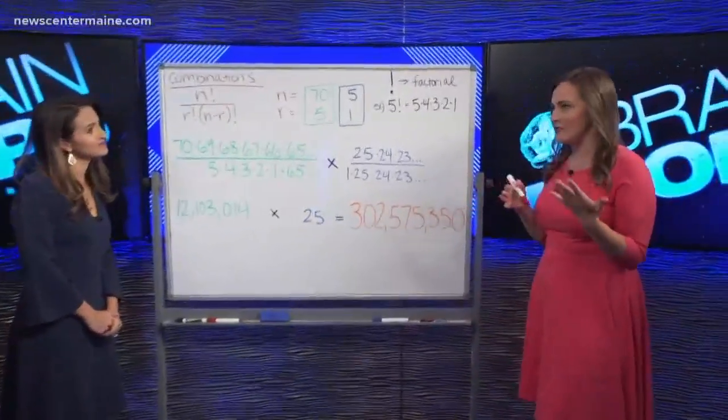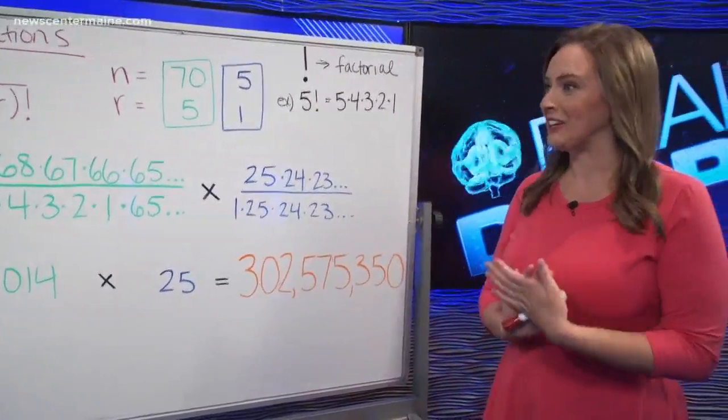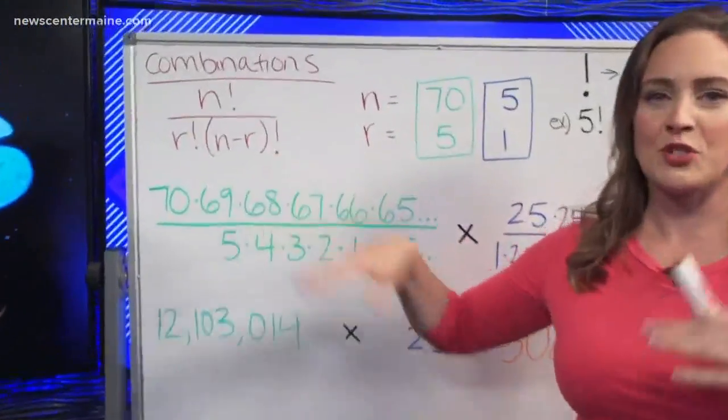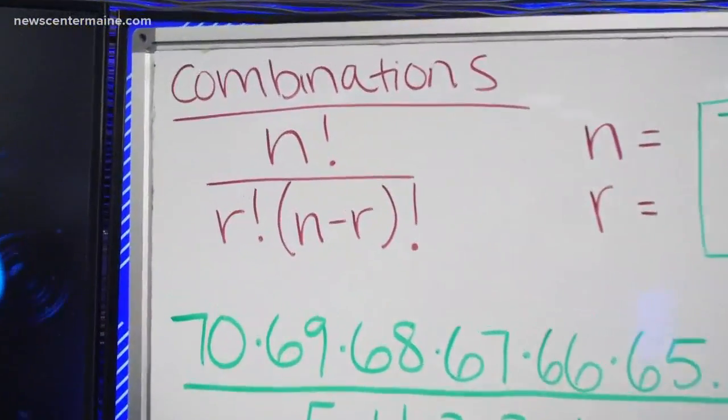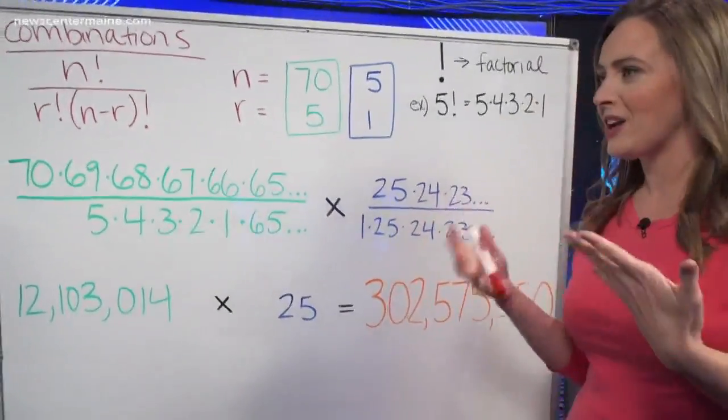We're going to do a little math. We're going to talk about, you always hear the odds of winning are whatever. So we're going to talk about how you actually calculate those odds, and we use a formula for combinations. We're trying to figure out we're pulling out five of the white balls and one of the yellow balls. Well, how do we figure that out?